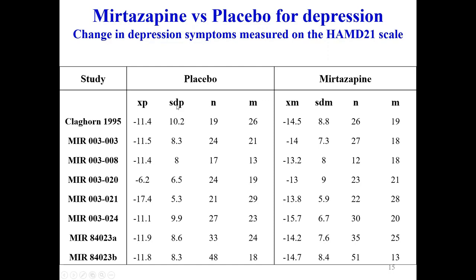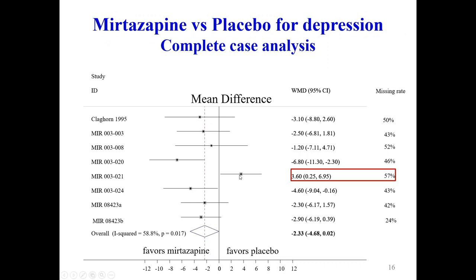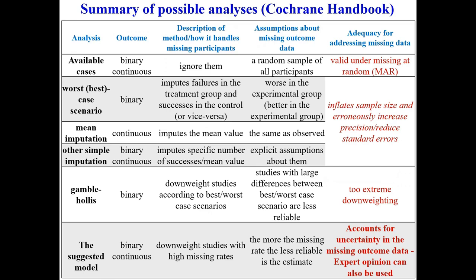The mirtazapine versus depression data shows the outcome mean X, standard deviation, sample size, number of completers, and missing participants — all trials have substantial missing data. One trial with a large missing rate is the only trial pointing in a different direction from the other seven, suggesting placebo is better than mirtazapine. The most common method is available case analysis, applicable to both binary and continuous outcomes.